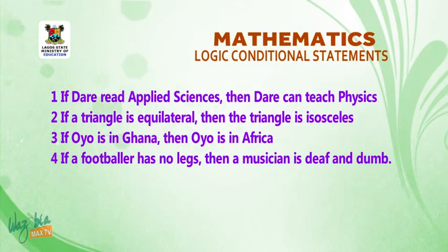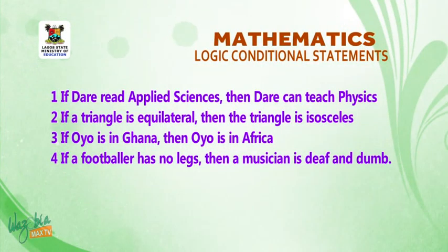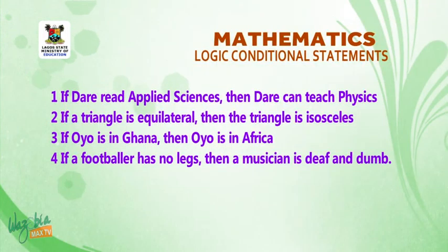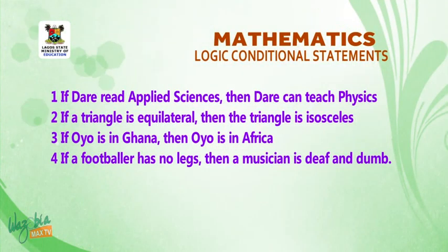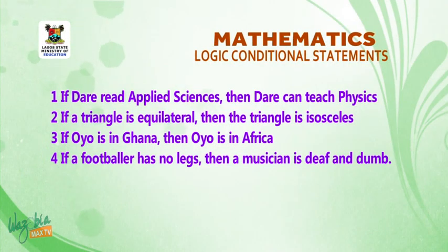Two: if a triangle is equilateral, then the triangle is isosceles. Three: if Oyo is in Ghana, then Oyo is in Africa. Four: if a footballer has no legs, then a musician is deaf and dumb.